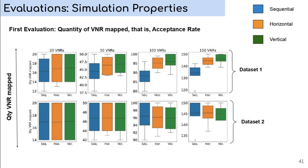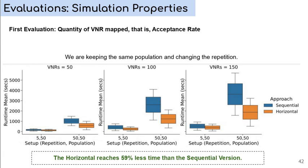Returning to the goal of this work, we intend to reduce the runtime. And the horizontal approach achieved this objective. In general, the vertical method obtained a higher runtime than the sequential. However, the horizontal reached 59% less runtime than the sequential version, taking into account all setups.